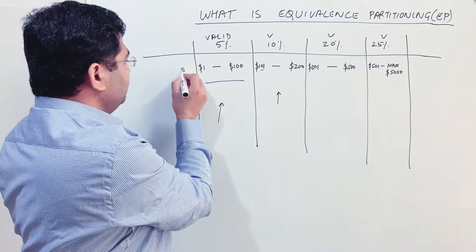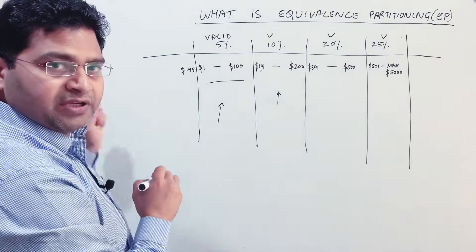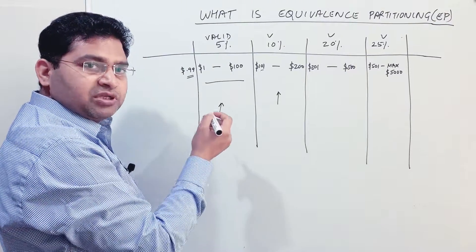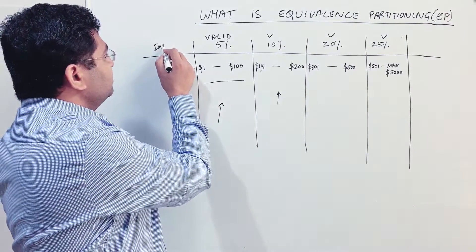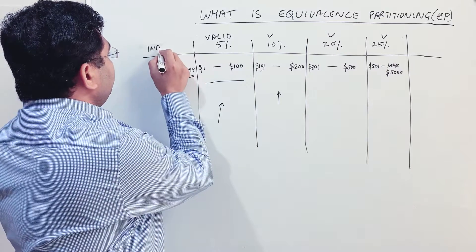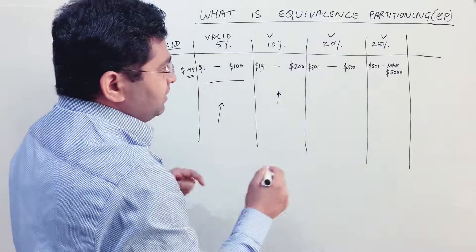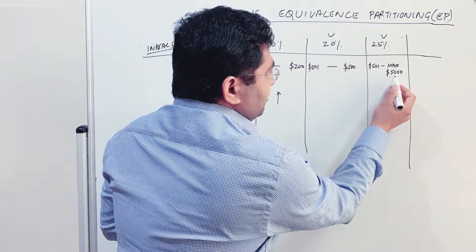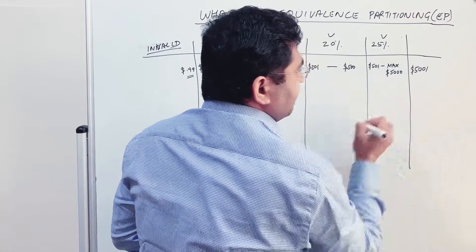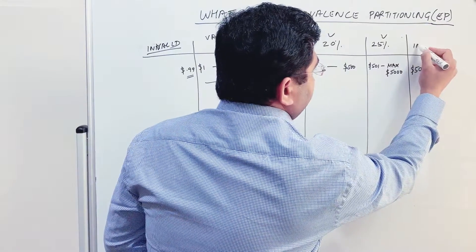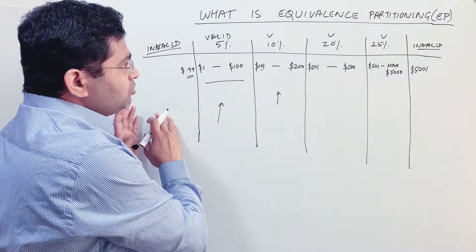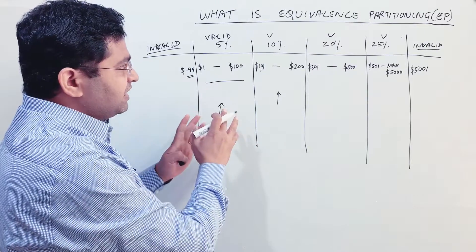Now, what happens for a purchase less than $1 — say $0.99? Should this be allowed on the application? If it shouldn't be allowed, then this becomes an invalid partition at the lower end. Similarly, because the maximum purchase amount is $5,000, a customer shouldn't be allowed to make a purchase of $5,001 — so that becomes another invalid partition at the higher end.